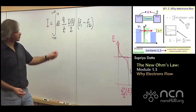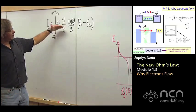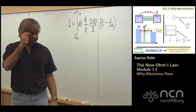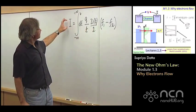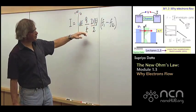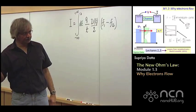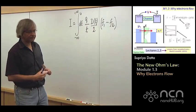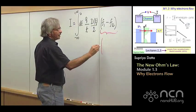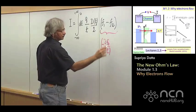Now, this is an expression one could use in general then to find the current. Now, there's one simplification one can make for small voltages. And that leads to an expression for the current that is proportional to the voltage. What I mean by that is when you use this, in general the current may not increase linearly with potential. But for small voltages, what one can do is this F1 minus F2 can be written as minus partial derivative of F with respect to E times QV.